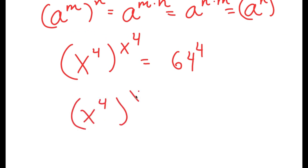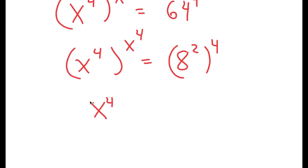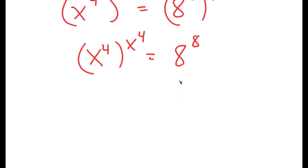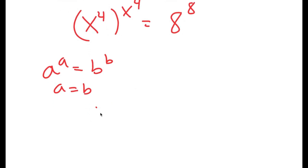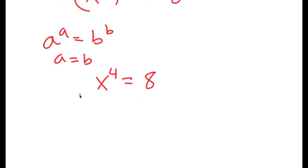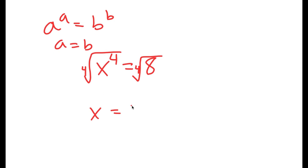Now, 64 to the power of 4 I can rewrite as 8 squared to the power of 4, which turns into 8 to the power of 8. If I have something in the form a to the power of a is equal to b to the power of b, this means that a equals b. So in this case, x to the power of 4 is equal to 8. To solve for x, I'm going to take the fourth root on both sides. So I get x is equal to positive or negative fourth root of 8.